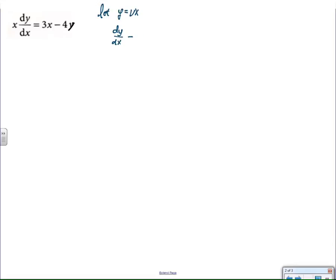Same process. We're going to let y equal v times x and take its derivative, giving us this substitution. Remember, it's x times dy/dx, which is now substituted here. And then, on the right-hand side, we have 3x minus 4 times vx.